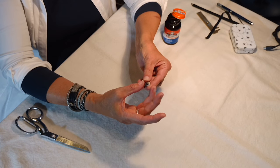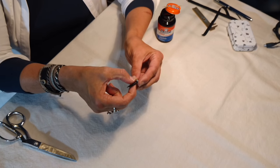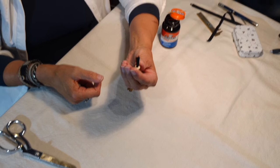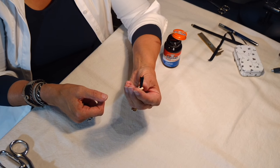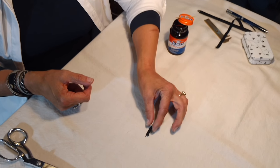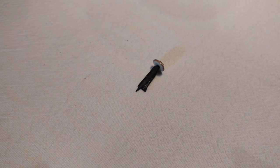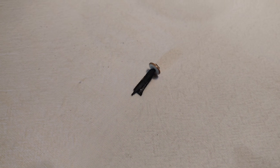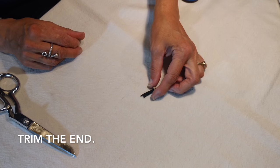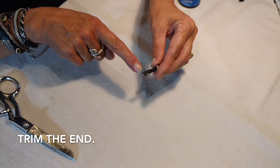Press the tabs together. Remove any excess glue, and your piece should look like this. Next, taking our scissors, we'll trim the end flush.